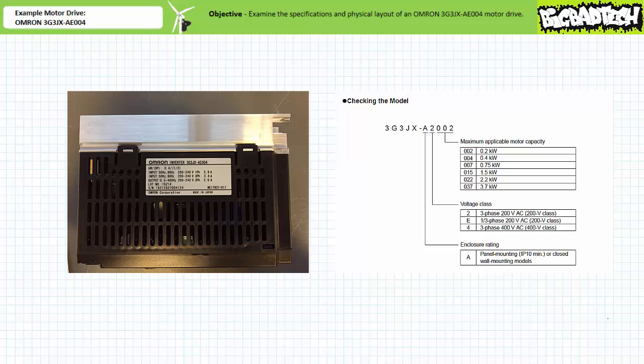The nameplate further specifies this value could be 200 to 240 volts as well as indicates current draw for a given input condition. The motor capacity entry of 004 specifies this drive is intended to operate a 400 watt or roughly half horsepower motor.